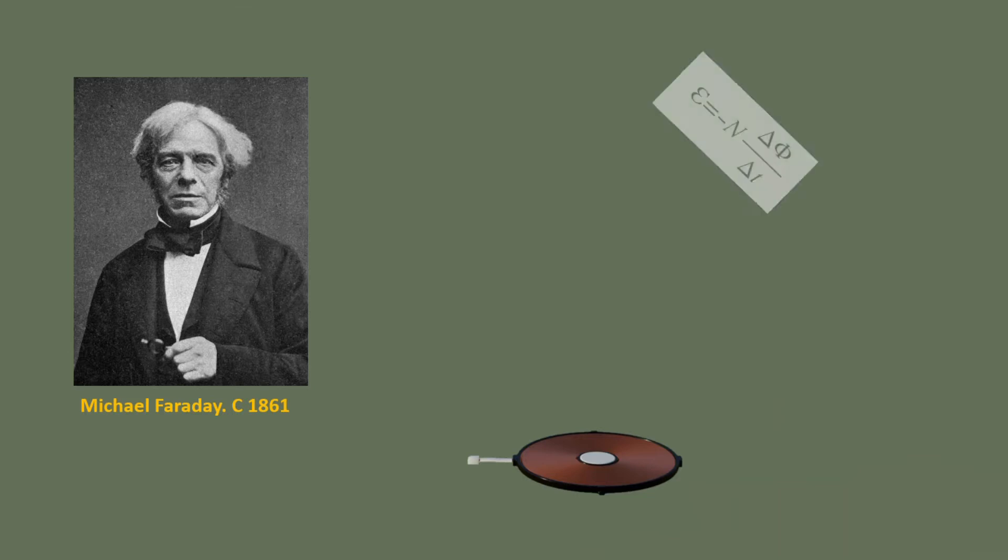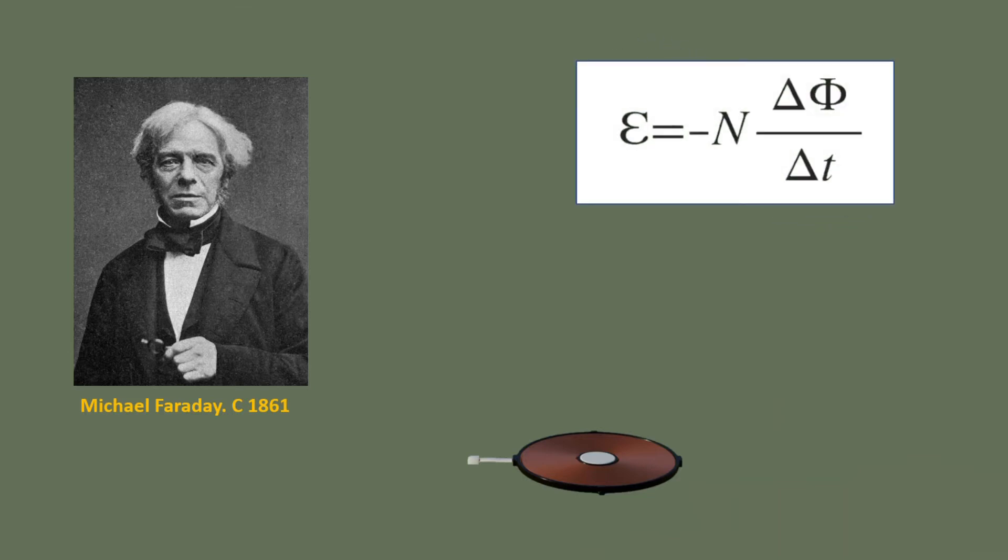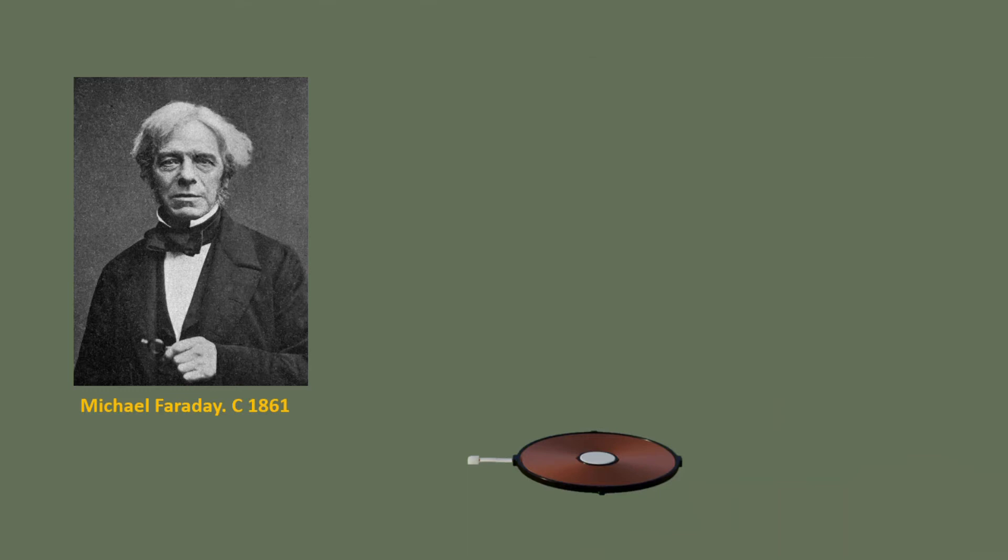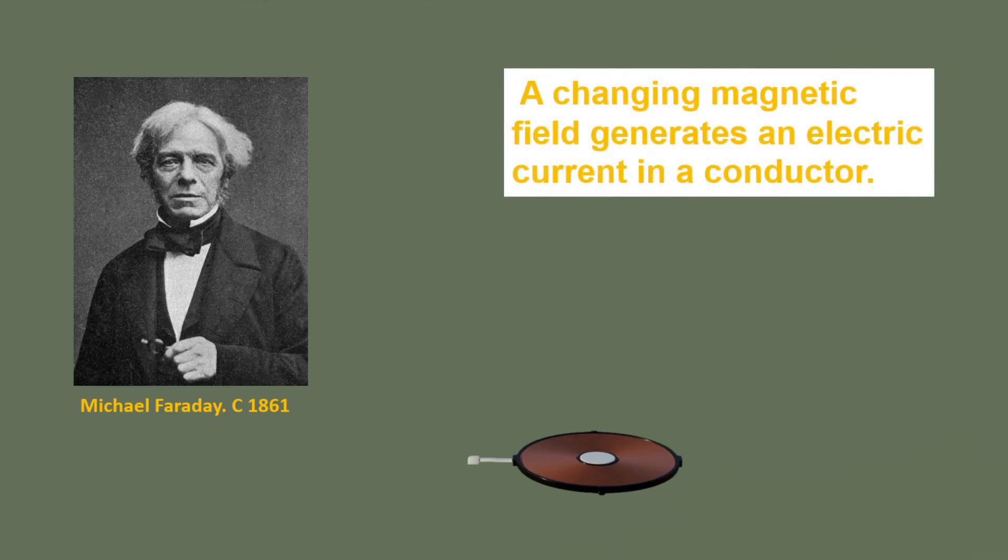According to the equation, the induced EMF is equal to the negative change rate of flux times the number of turns. In plain words, a changing magnetic field generates an electric current in a conductor.